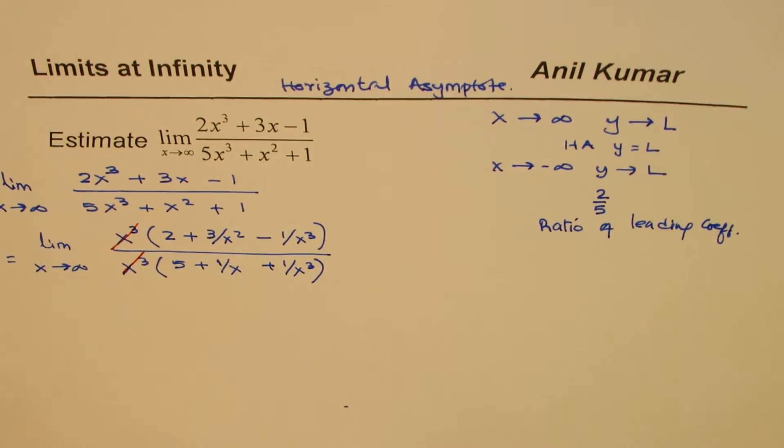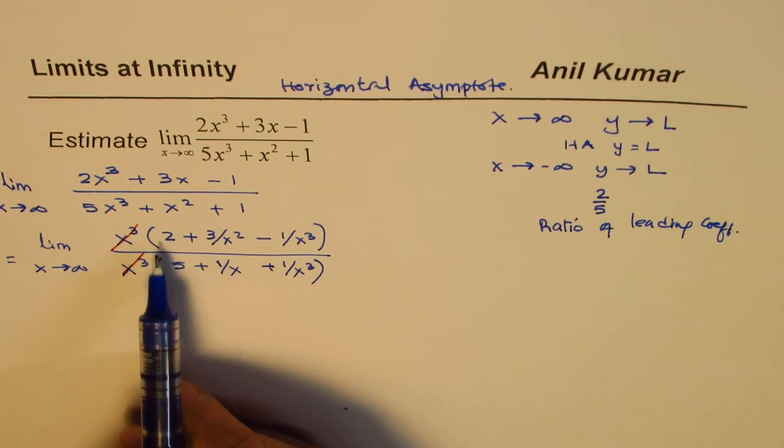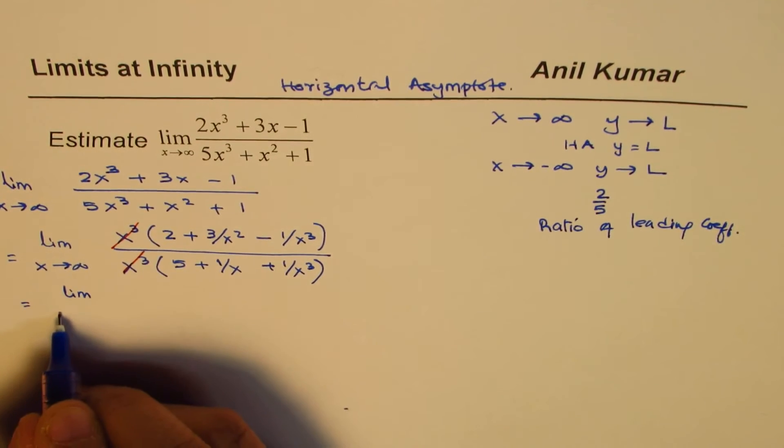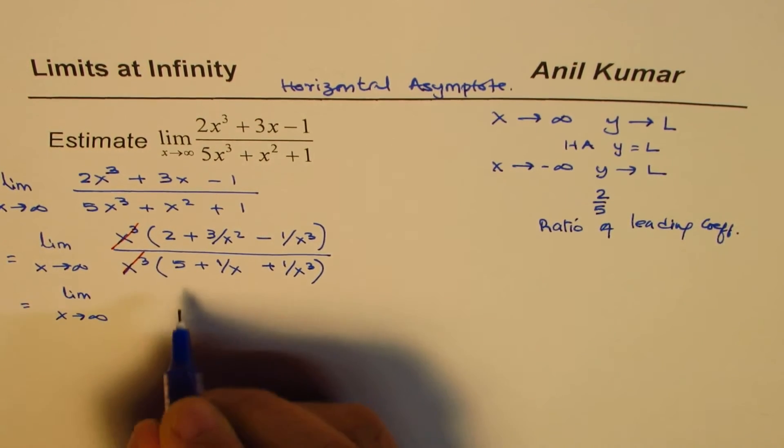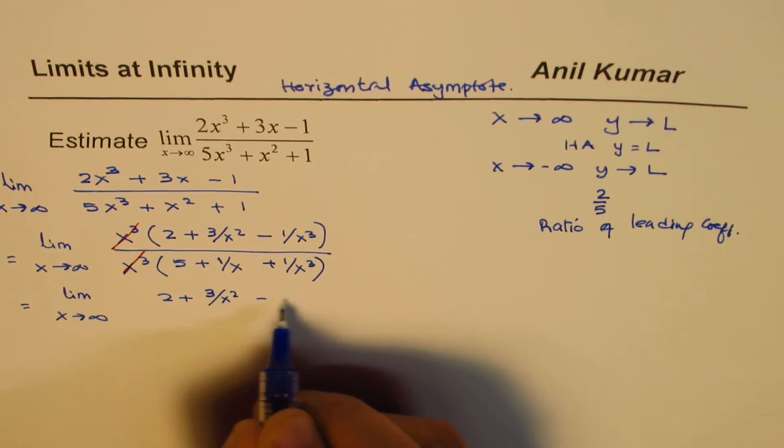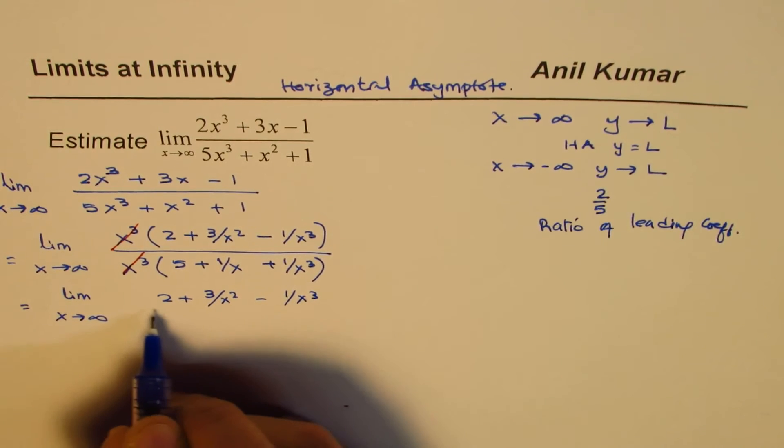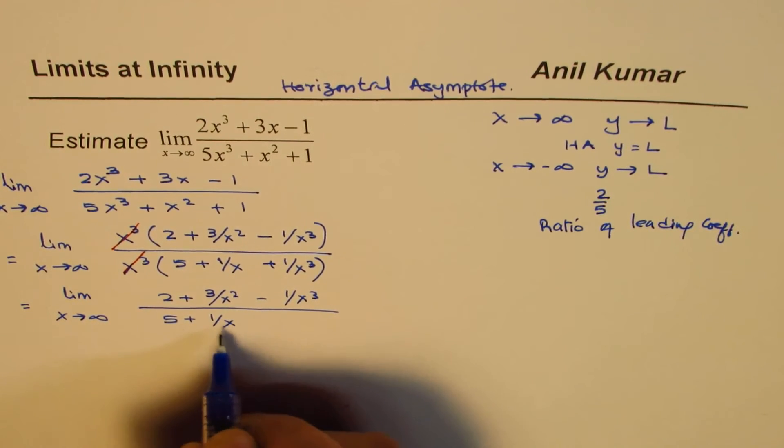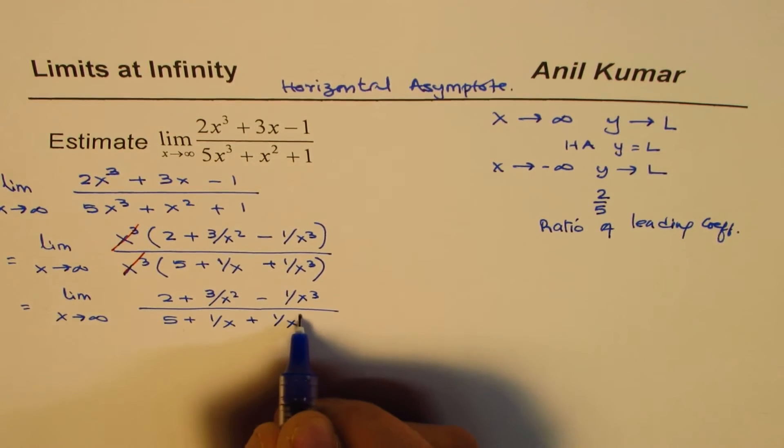What remains is limit x approaches positive infinity: (2 + 3/x² - 1/x³) divided by (5 + 1/x + 1/x³).